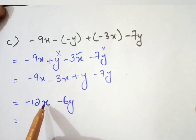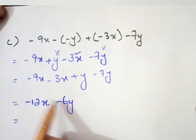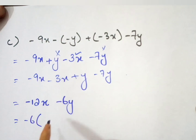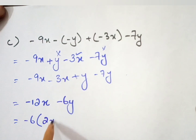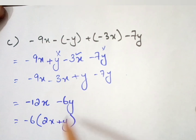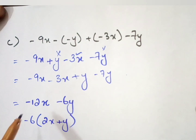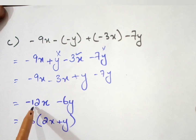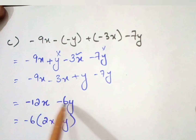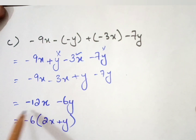There is minus in both terms and 6 is also a common factor in both terms, so we can take minus 6 as a common factor: minus 6 times (2x plus y). This is because 6 times 2 equals 12 and 6 times 1 equals 6, and there is minus in both terms, so we take the common factor outside the bracket. Note: it is not necessary — you could also stop at minus 12x minus 6y.